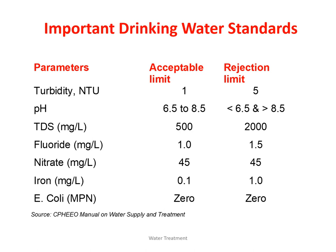For fluoride, the desirable limit is 1 mg per litre and it should not be greater than 1.5 mg per litre. For nitrates there is no exemption — it should be 45 mg per litre. For iron, 0.1 mg per litre is the desirable limit and we can use up to 1 mg per litre, but beyond 1 mg per litre we should reject the water. For E. coli — that is coliform bacteria — measured in most probable number (MPN), it should be 0.